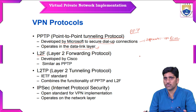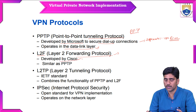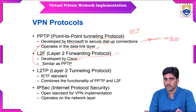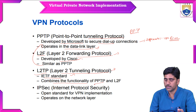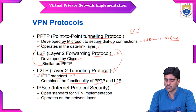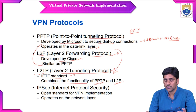The second protocol is L2F — Layer-2 Forwarding Protocol, developed by Cisco. It similarly operates in the data-link layer and uses secure dial-up connections. The third is L2TP — Layer-2 Tunneling Protocol — which is an Internet Engineering Task Force standard. It combines the functionality of both PPTP and L2F, and also operates in the data-link layer.